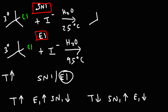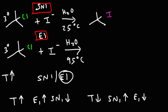In the first example, we're going to replace chloride with iodide. The water doesn't really need to react — what it's going to do is solvate the carbocation. But we will get chloride as a side product. So those are the products for the first reaction.